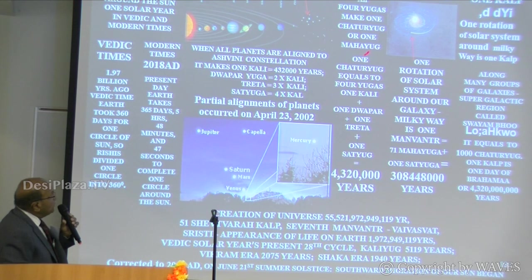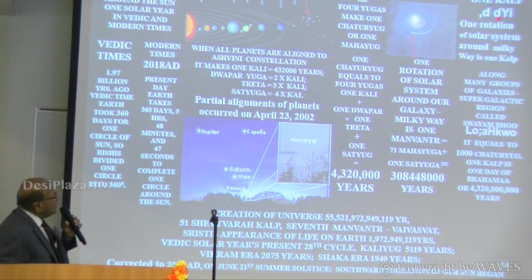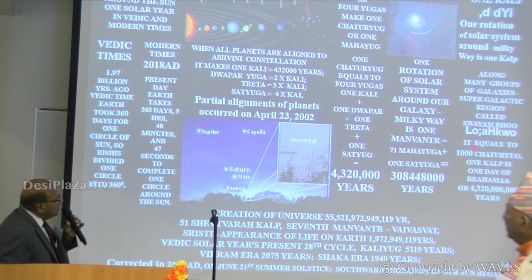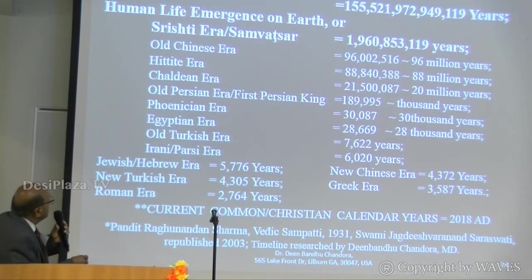To summarize: one rotation of the solar system around our galaxy is one Manvantara, equal to 71 Maha Yugas plus one Satya Yuga. One Kalp is one rotation of the solar system around the Milky Way. Along many galaxies, in the super galactic region, they rotate around the super center — which becomes one day of Brahma.